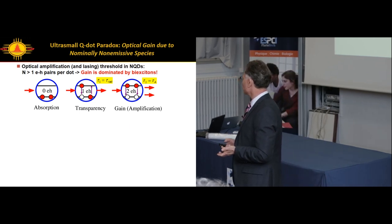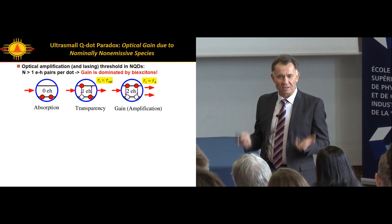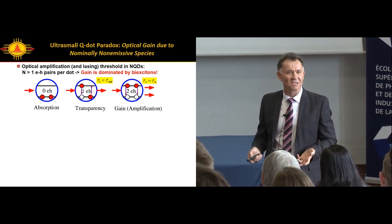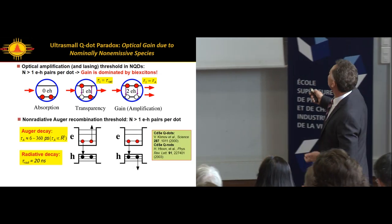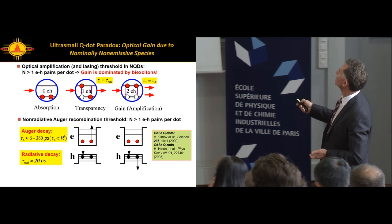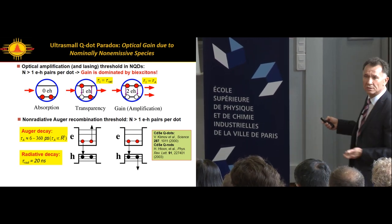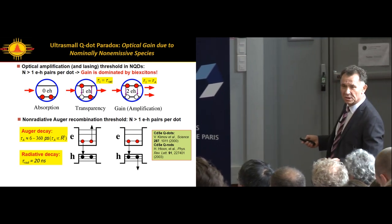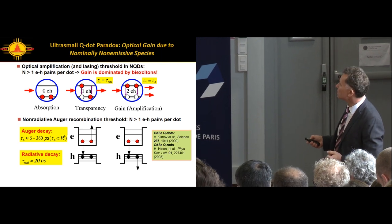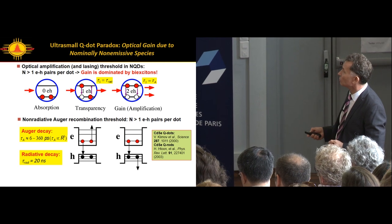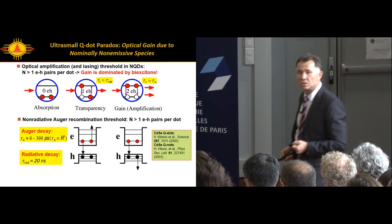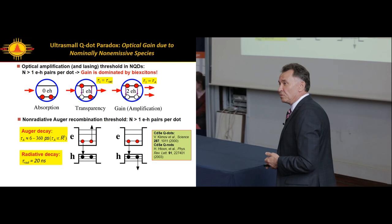To excite optical gain, you have to produce the second exciton. You need a biexciton. This is the conclusion we made in 2000. Very important conclusion. Lasing, optical gain in the system explicitly relies on emission from biexcitons. Of course, you immediately realize the problem. This is what I call ultra-small quantum dot paradox. You need biexcitons to produce stimulated emission, you want light from them. But these decay like crazy due to Auger recombination, extremely short lifetimes, much shorter than typical radiative time constants.